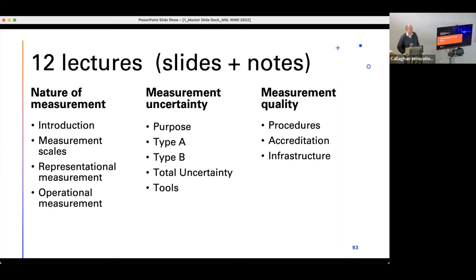There's a large block of lessons on measurement uncertainty, including one that focuses just on its purpose. And then finally, the three lectures on measurement quality. So we start at the inside of it, building technical procedures. Then we talk about the environment in which those procedures are carried out within an organization. So that's quality systems and accreditation. And then we talk about the national quality infrastructure.